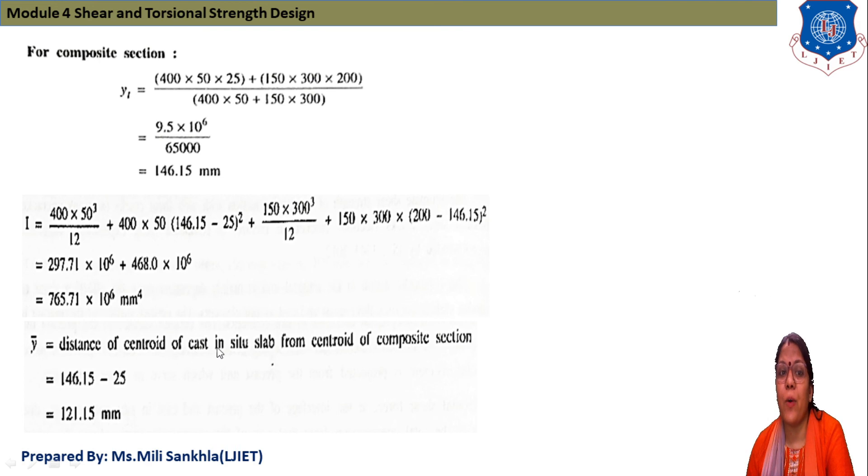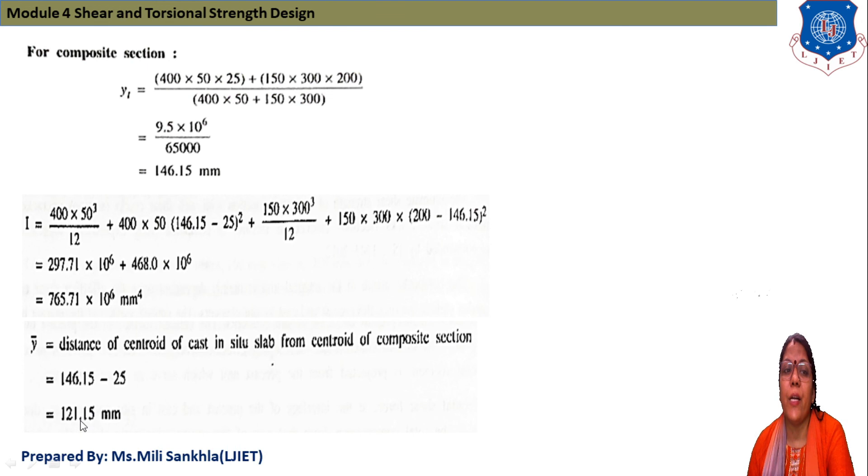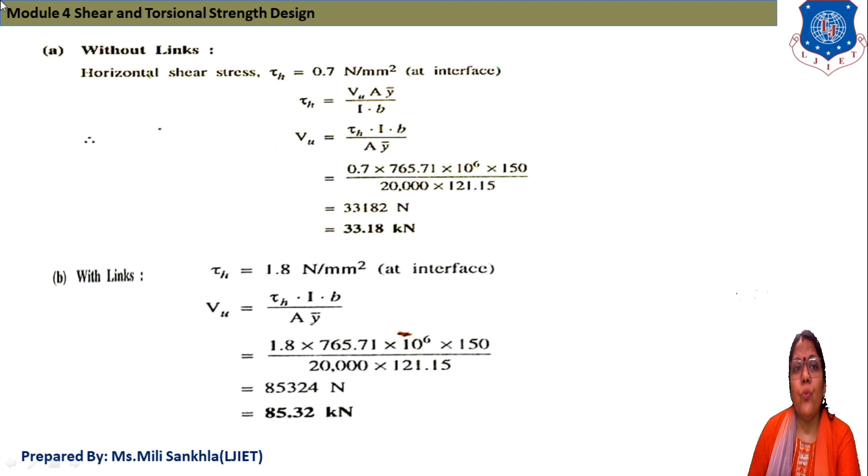We find 146.15 mm minus 25, and that is we get 121.15 mm. Now we find two shear stresses: without link and with link.